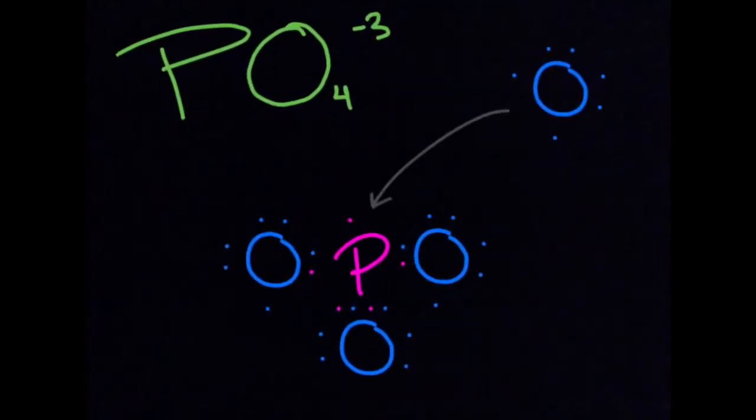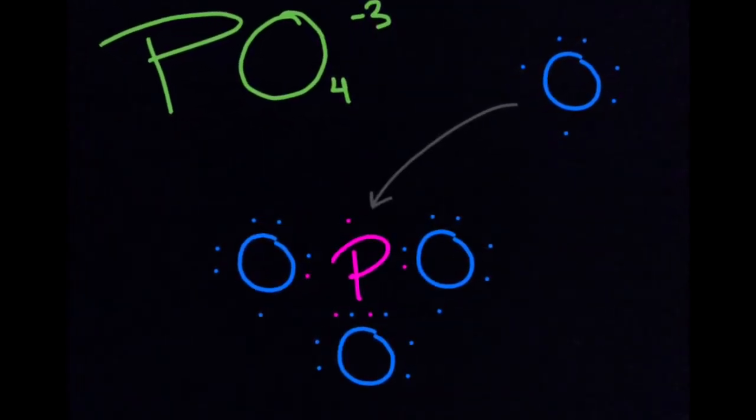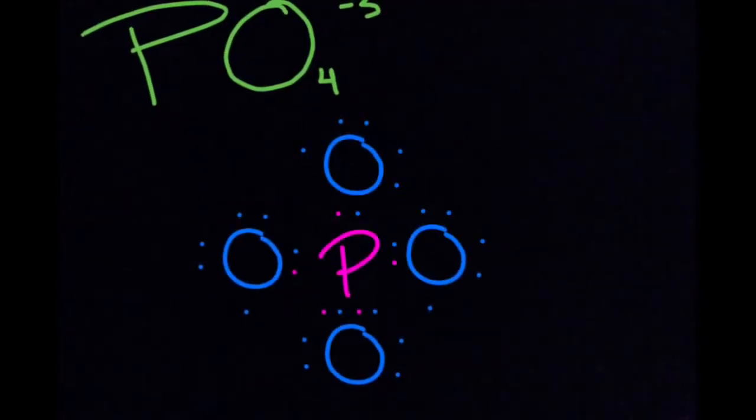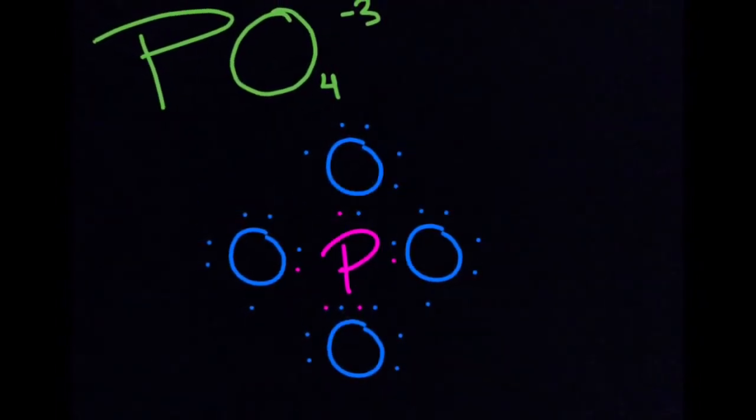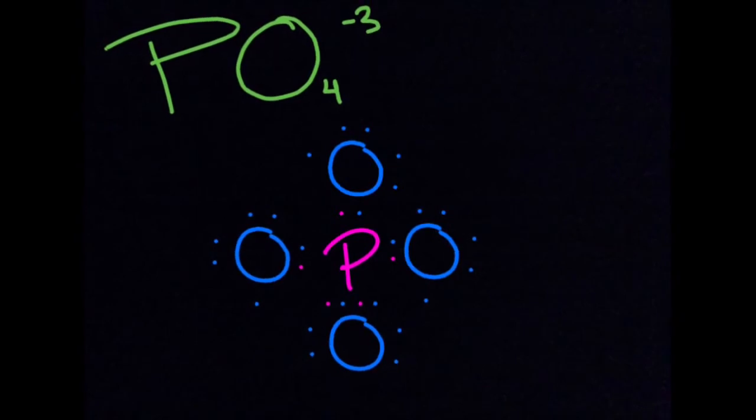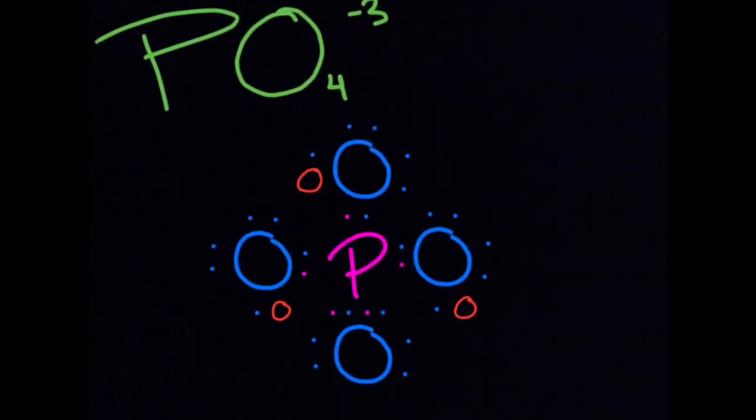Thank you, oxygen on the bottom, for taking one of the bonds. Now we can bring in your other oxygen friend. There we go. Now all the oxygens are linked to the phosphorus. However, we're not done yet. Seems great, right? No.